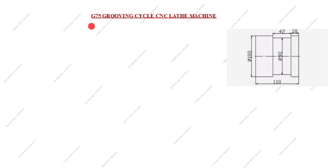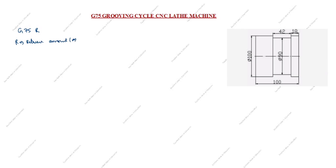Hi friends, welcome to my channel Excellent Ideas in Education. Today we are going to learn about the G75 grooving cycle on a CNC lathe machine. What is G75 grooving cycle code? G75 R is the return amount, or retract amount.